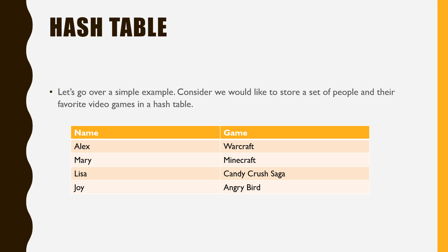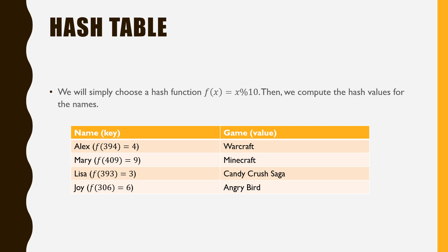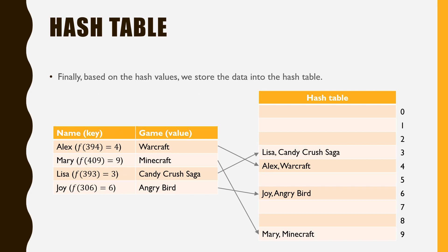Let's go over a simple example. Suppose we would like to store a set of people and their favorite games in a hash table. We know that the names of the people are likely to be unique, and we choose the name field to be the key. We simply look up the ASCII table and find the code for each letter, and add them up to convert the names to real values. Then we come up with a simple hash function f, which simply computes the modulo of 10. We apply this hash function to the real values converted from the names, and compute the corresponding hash values. Finally, based on the hash value, we insert the records to the corresponding positions of the hash table.